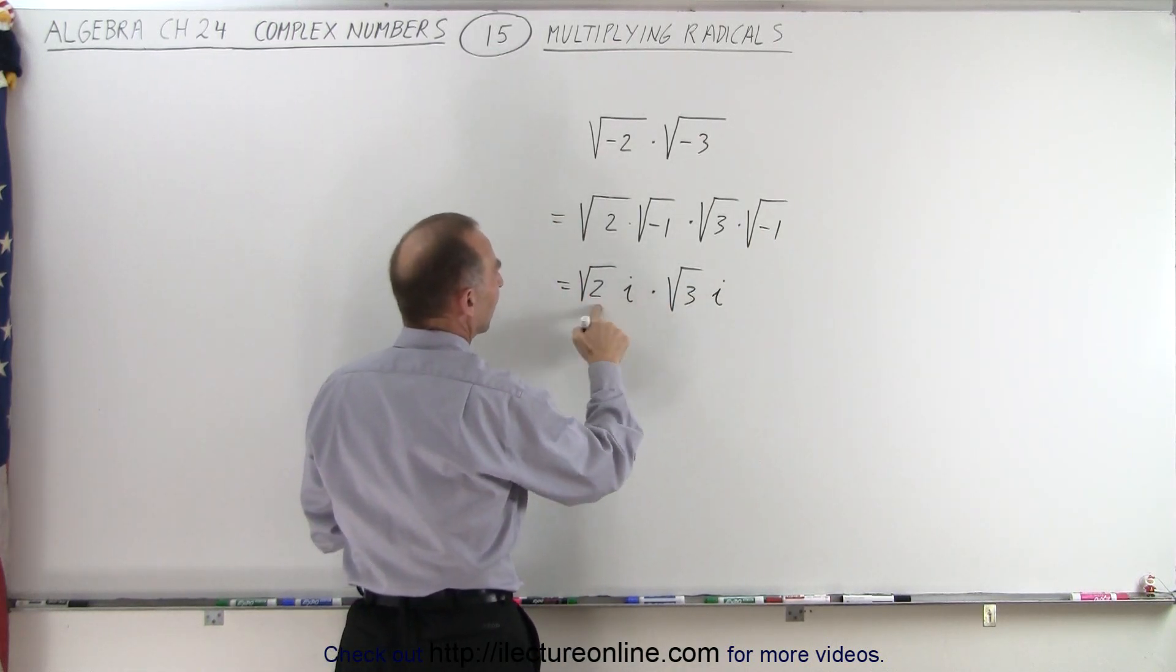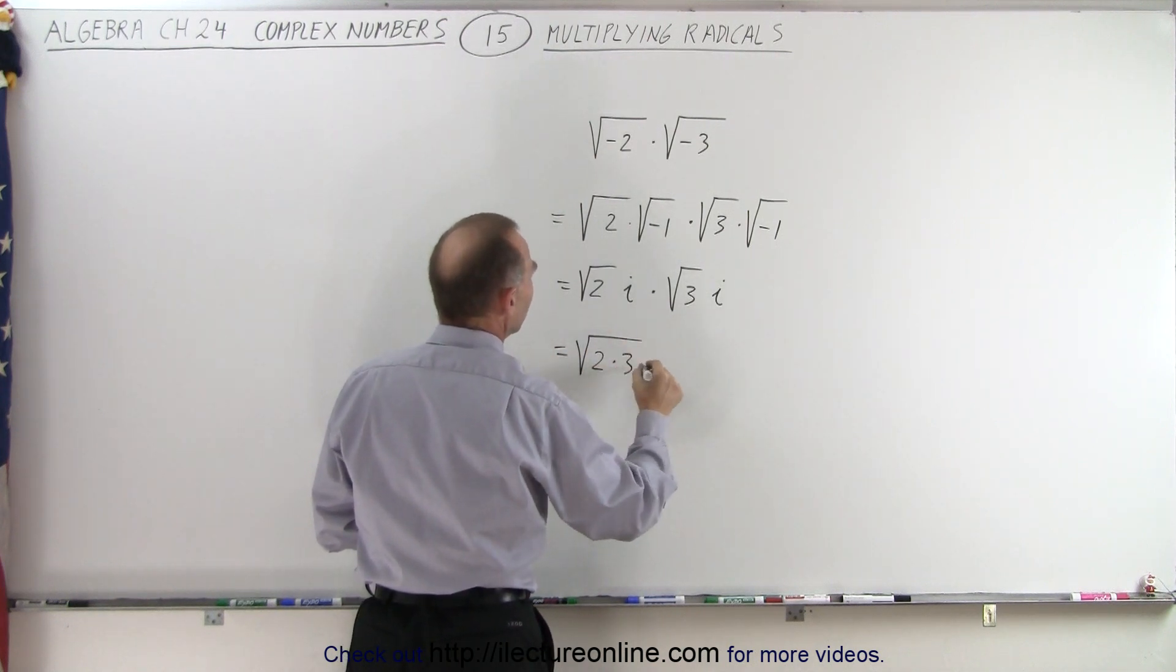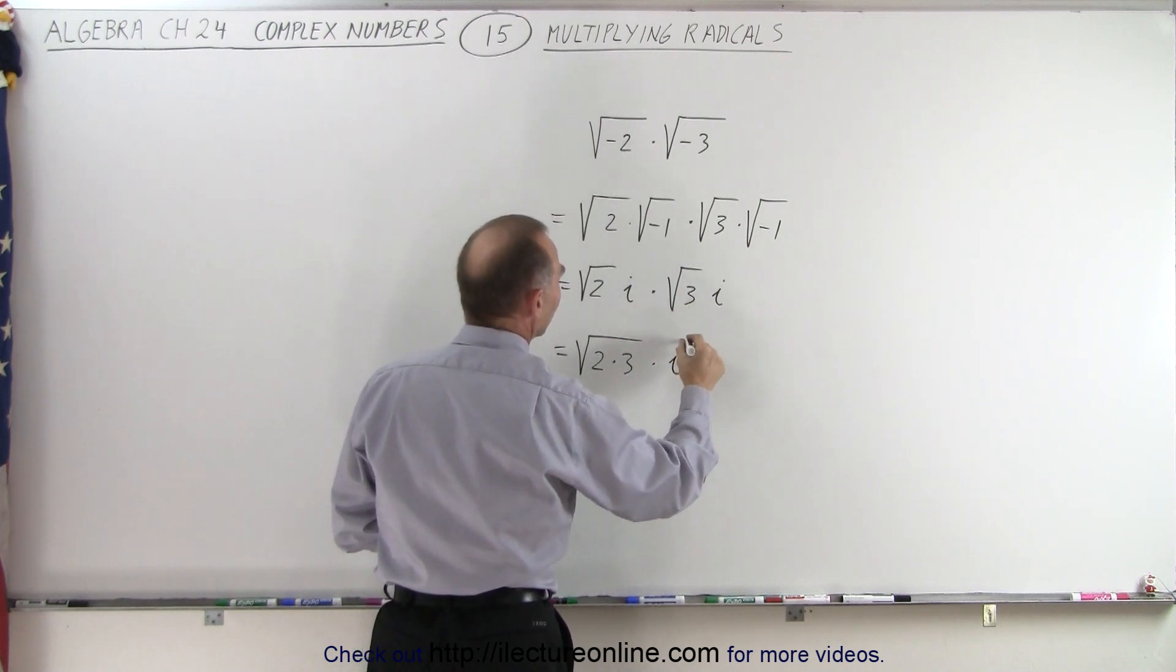And now we're ready to multiply. When we multiply these two together, that equals the square root of 2 times 3, times i times i, which is i squared.